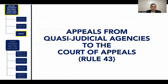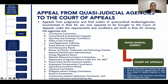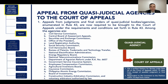Appeals from judgments and final orders of quasi-judicial bodies or agencies enumerated in Rule 43 are required to be brought to the Court of Appeals. Among these agencies are: Civil Service Commission, Central Board of Assessment Appeals, Securities and Exchange Commission, Office of the President, Land Registration Authority, Social Security Commission, Civil Aeronautics Board, Bureau of Patents Trademarks and Technology Transfer, National Electrification Administration, Energy Regulatory Board, National Telecommunications Commission, Department of Agrarian Reform, Government Service Insurance System, Employees Compensation Commission, Agricultural Inventions Board, Insurance Commission, Philippine Atomic Energy Commission, Board of Investments, Construction Industry Arbitration Commission, and Voluntary Arbitrators authorized by law.